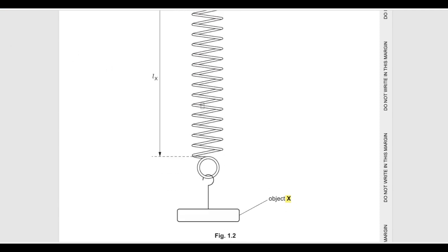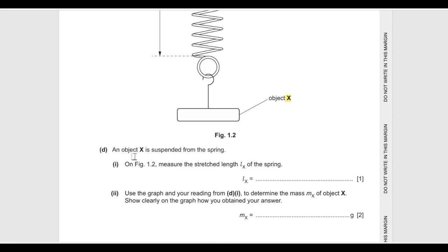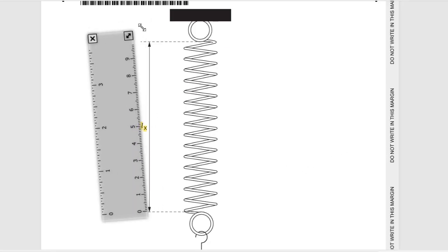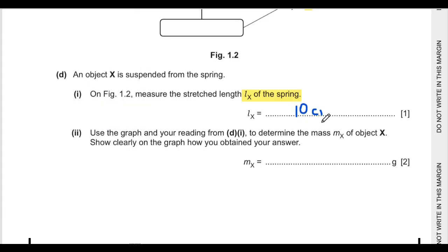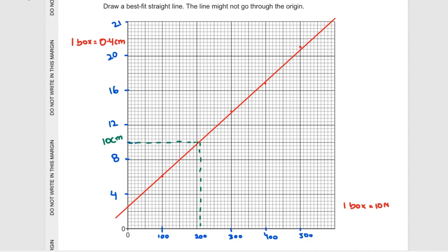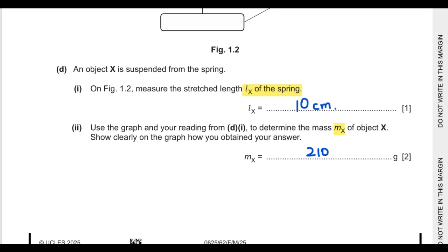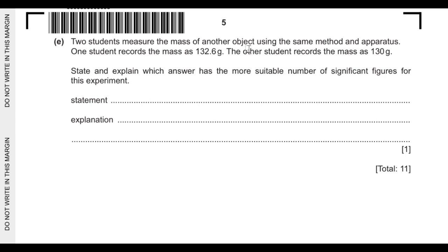Next we have a spring with an unknown mass X attached, and L X is the stretched length. An object of mass X is suspended, and I measured the stretched length which is exactly equal to 10 centimeters. Using the graph and that reading, to determine mass X: for 10 centimeters of stretched length you can see the mass is 210 grams, so I've written that answer in the provided space.